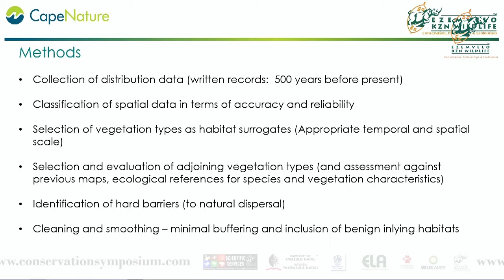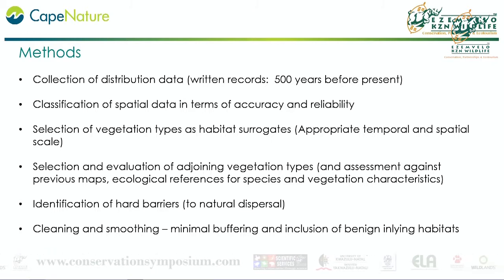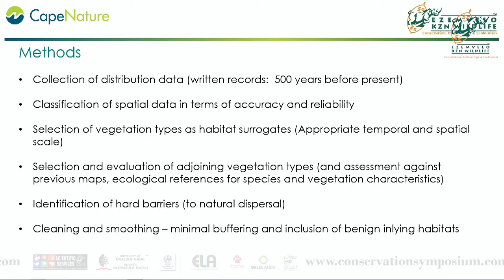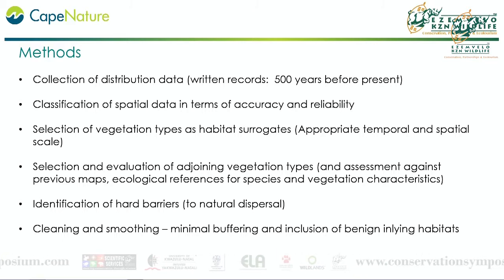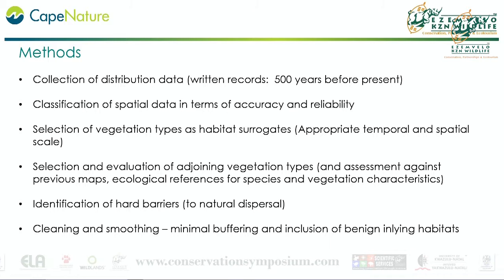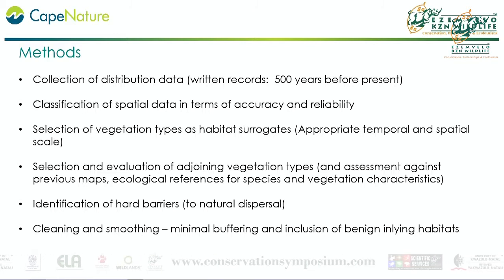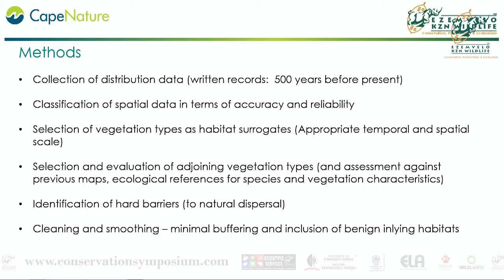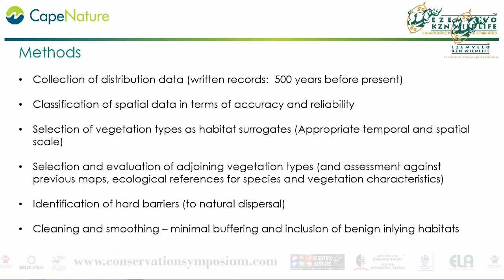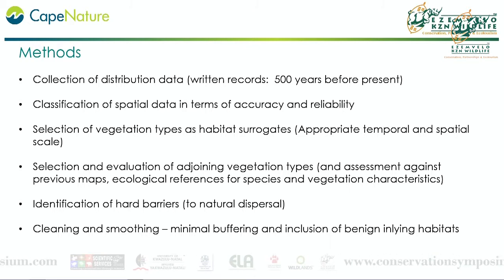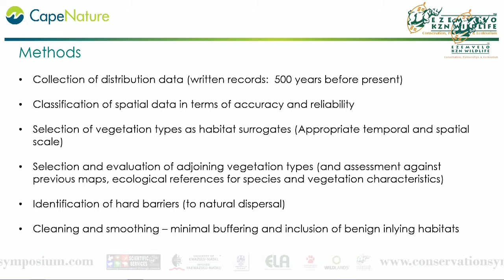Then we selected adjoining vegetation: after going through the process of selecting veg types that had distribution data, we considered those veg types that joined them or had been previously captured since 1990, and then evaluated those veg types in terms of ecological criteria — not only for the vegetation, but also for the species in terms of its behavior, ecology, and requirements. We then identified hard barriers to natural distribution, like the escarpment, and then did cleaning and smoothing with minimal buffering to include some of those benign inlying habitats.